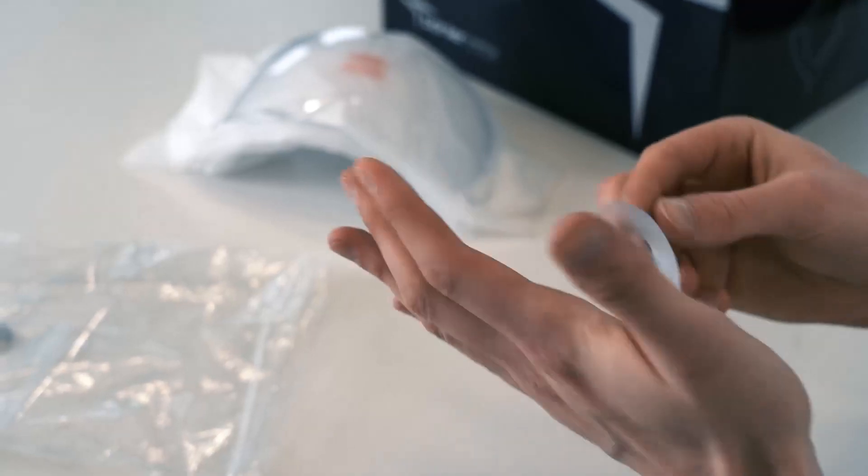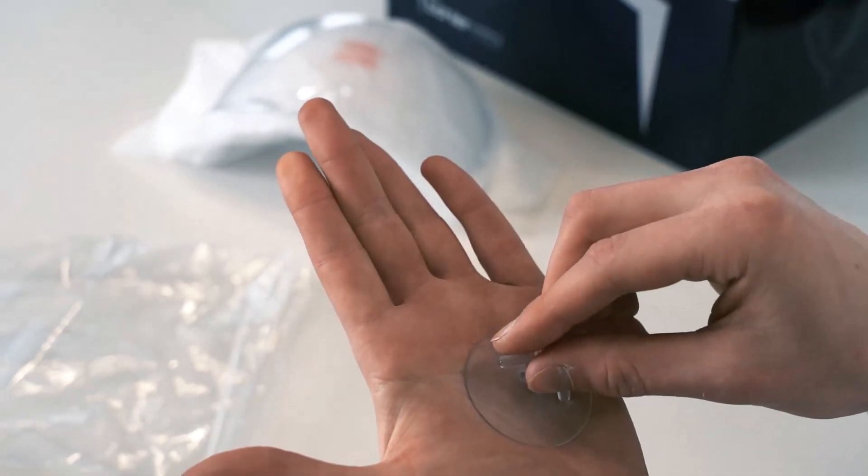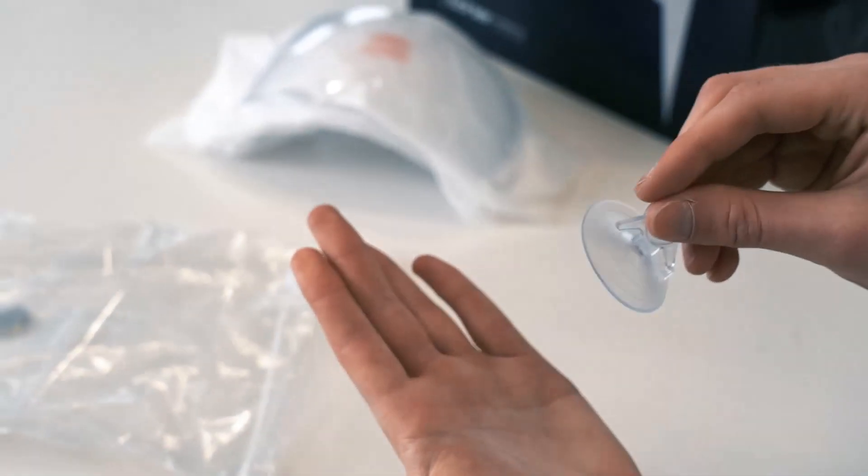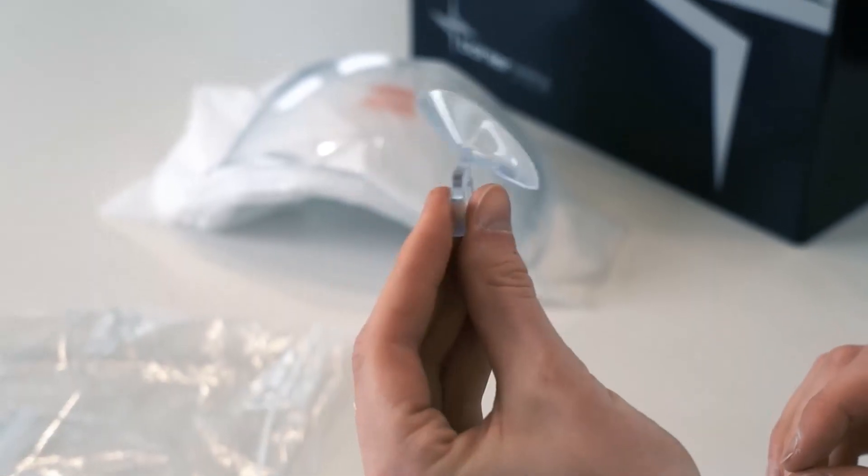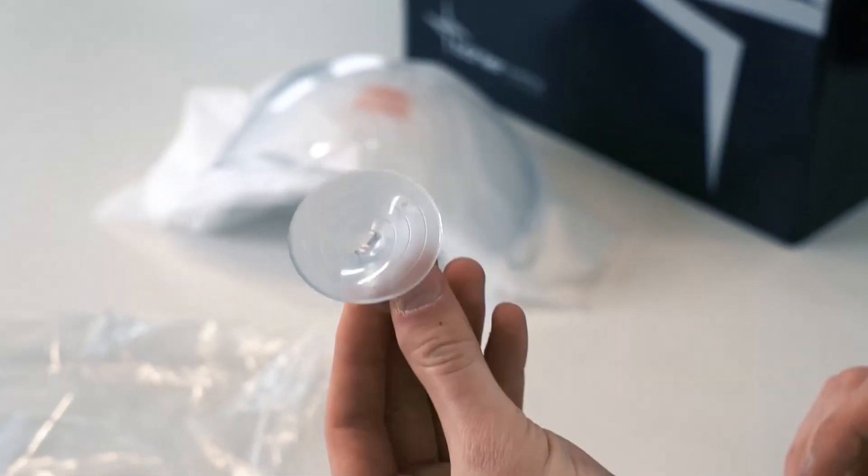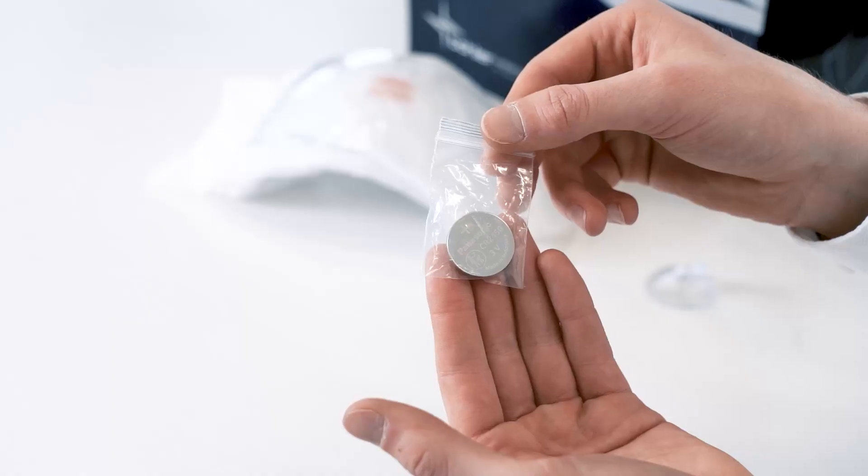A small plunger for easy changing of the inner lens. And a replacement battery for the darkening cassette.